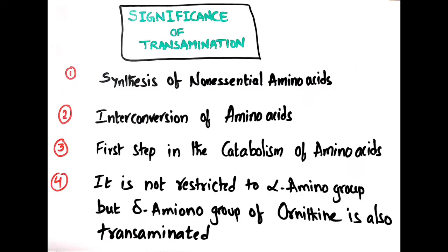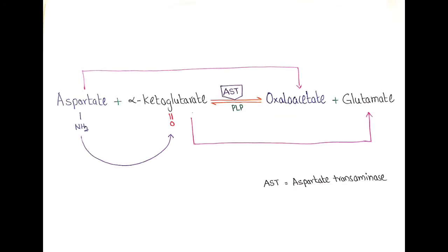Now coming to the significance of transamination. Transamination is involved in the synthesis of non-essential amino acids — those that our body can synthesize without needing to take them in the diet. Examples of non-essential amino acids are aspartate, glutamate, and alanine.